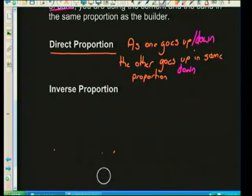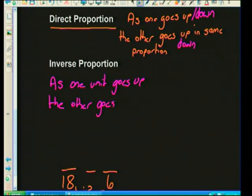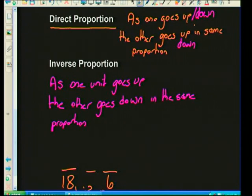Inverse proportion, on the other hand, is where as the one unit goes up, the other goes down — in the same proportion. And we can reverse that: as the one unit goes down, the other will go up. This all sounds very confusing with lots of ups and downs, so let's look at two quick examples — I think that'll make it much easier.